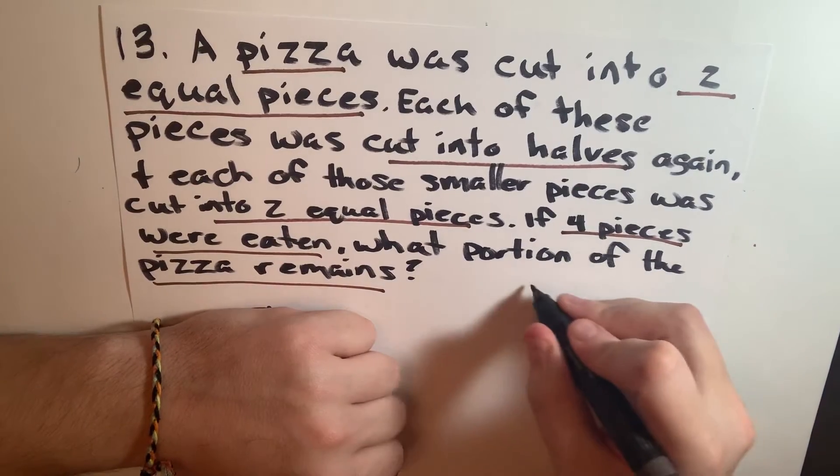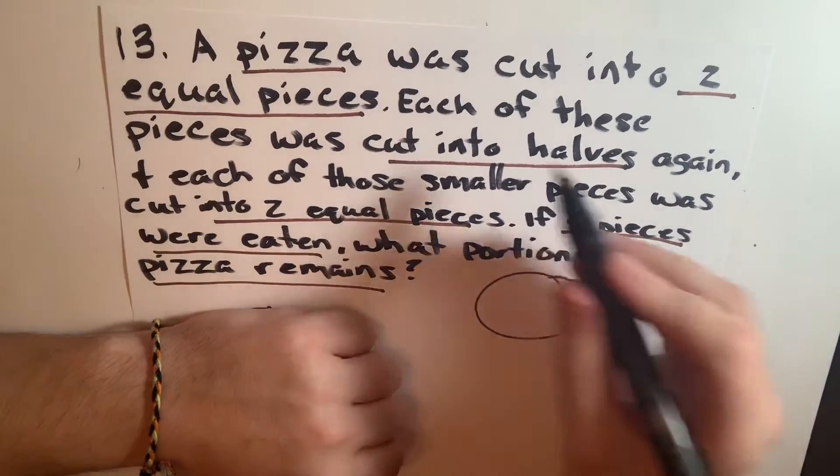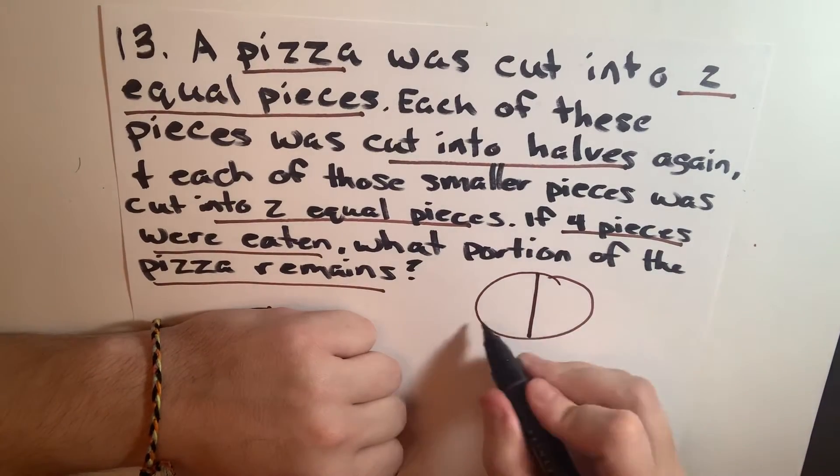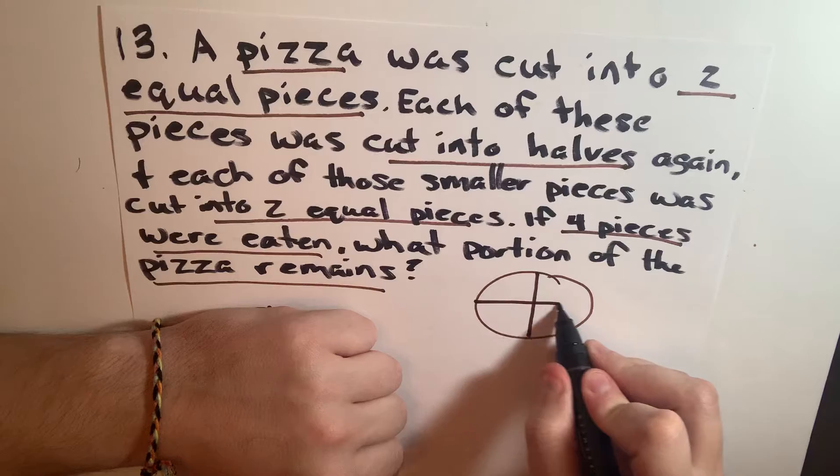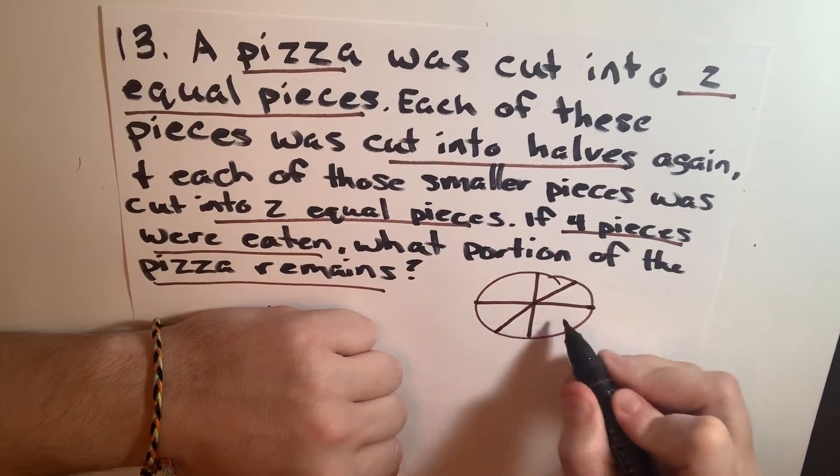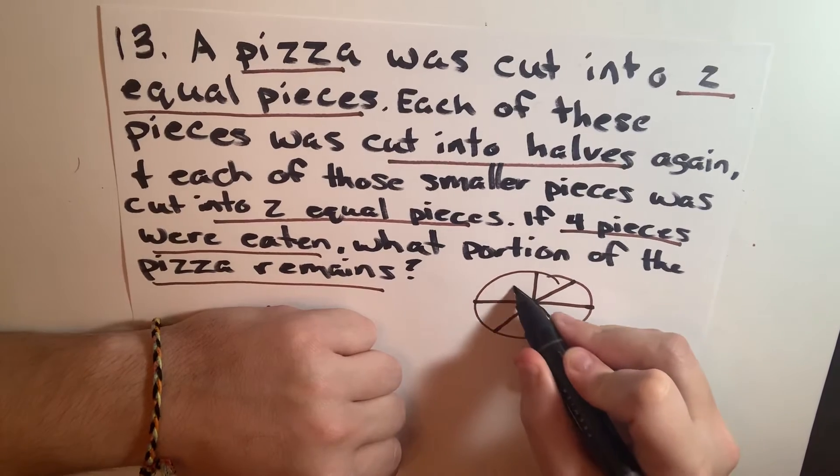So we're going to draw a pizza. If it was cut into half, we're going to put a line right down the middle. If those were each cut into half, we're going to put another line right down the middle. If each of these were cut in half, we're going to put two more lines down the middle.